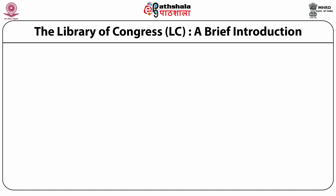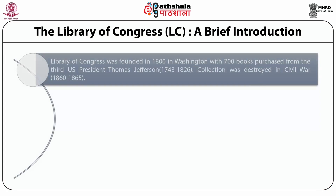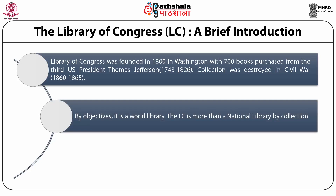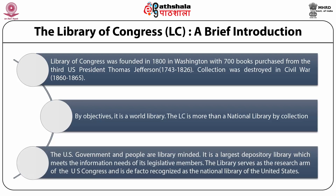The Library of Congress — a brief introduction. The Library of Congress was founded in 1800 in Washington, with 700 books purchased from U.S. President Thomas Jefferson. This collection was destroyed in the Civil War. It is a world library, the greatest library in the world, the leader library. The Library of Congress is more than a national library by collection, though the U.S. has no national library de jure. The U.S. government and its people are library-minded. It is the largest depository library which meets the information needs of its legislative members.